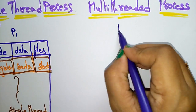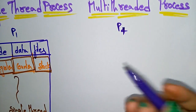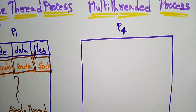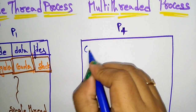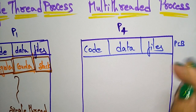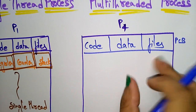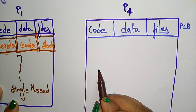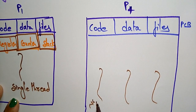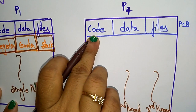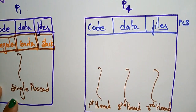Now let us see the multi-thread process. Let us take process P1. This is a single process. Like before, it has code, data, and files stored in the process control block, which holds all related process information. This information is shared by all the threads. Suppose there are multiple threads — a first thread, a second thread, and a third thread. All three threads share the same code, data, and files present in the process control block.